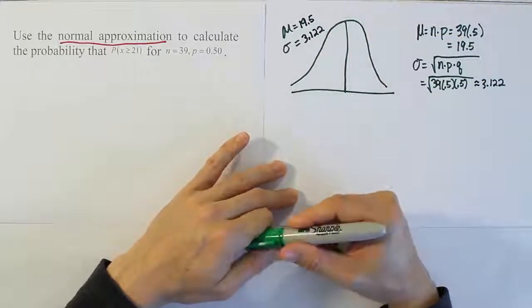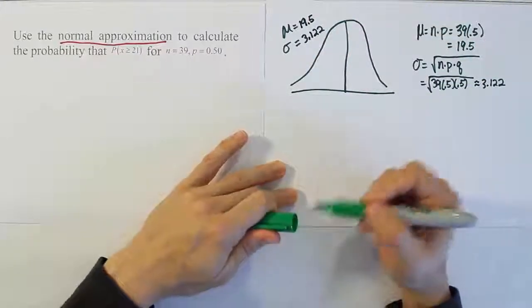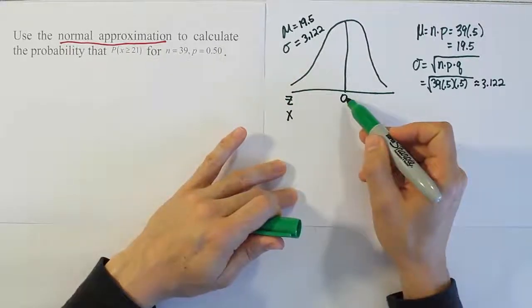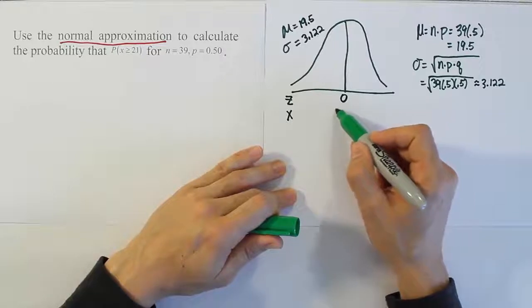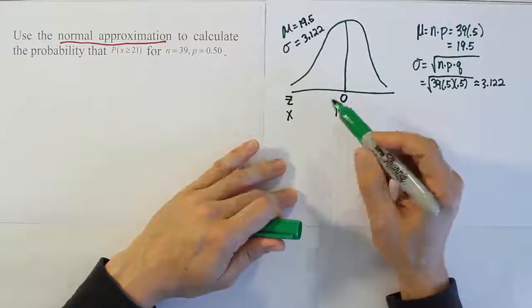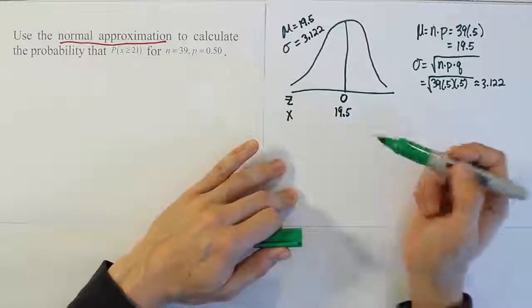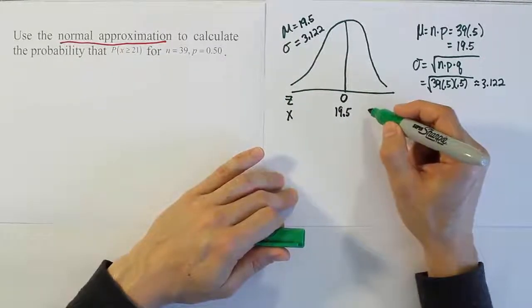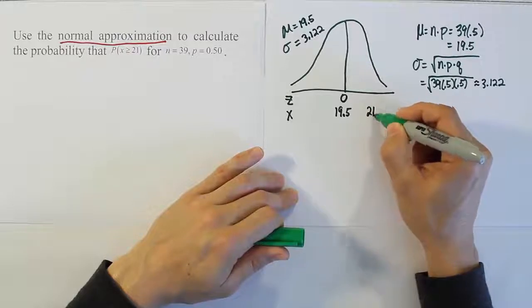Now from there, our next step is to take the z axis and x axis and label our means. So our mean for z is 0. The mean for x is 19.5, where x is the number of successes out of 39 trials. And we want that number to be greater than or equal to 21. So 21 would be on this side of the curve.